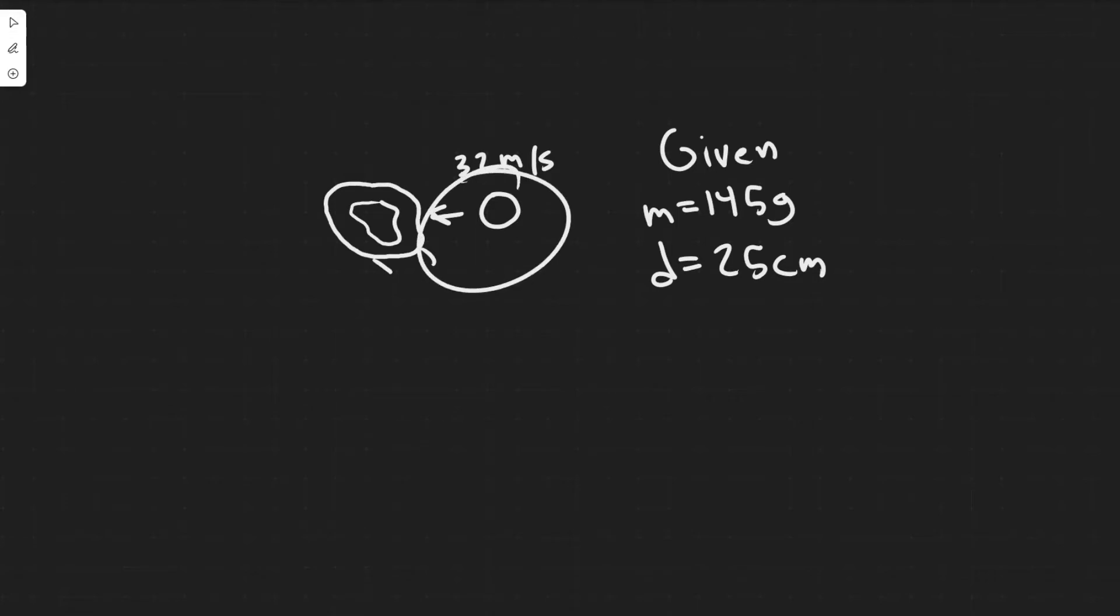So in this problem, we have this ball being thrown 32 meters per second. It's going to move towards this glove, and then when it's caught, it's going to move the glove backwards, essentially 25 centimeters. So it's going to change a distance of 25 centimeters. We're also given the mass, and what we're solving for in this problem is force.